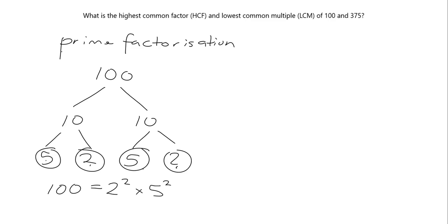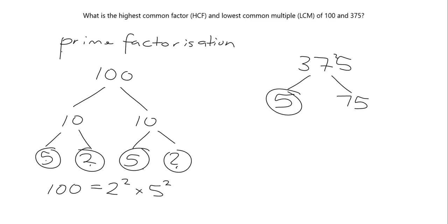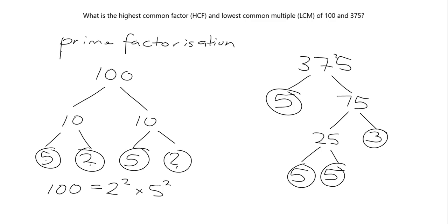Pause the video and find the prime factorization of 375 in your homework books. Let's go over that. 375 — obviously 5 will go into that. 5 times 75 gives 375. 5 is a prime number. 75 is 25 times 3, and 3 is a prime number. 25 can be broken down into 5 times 5, and those are both prime numbers. So the prime factorization of 375 is 3 multiplied by 5 cubed.